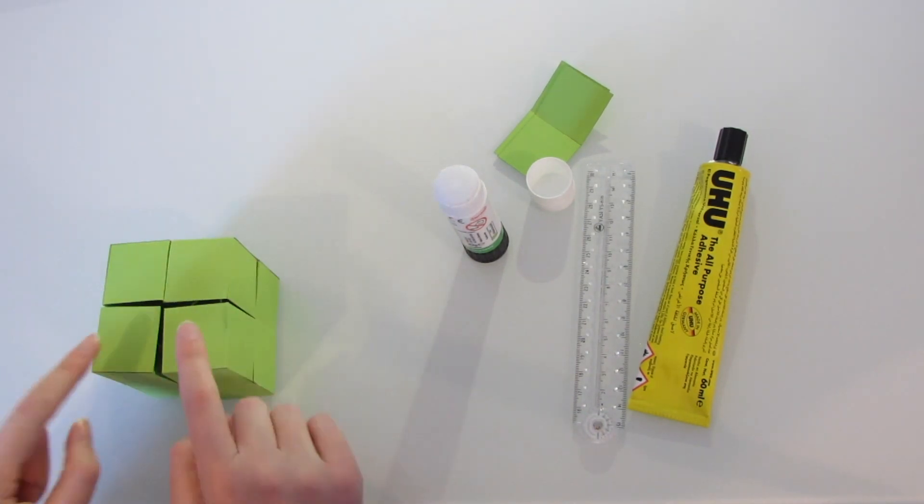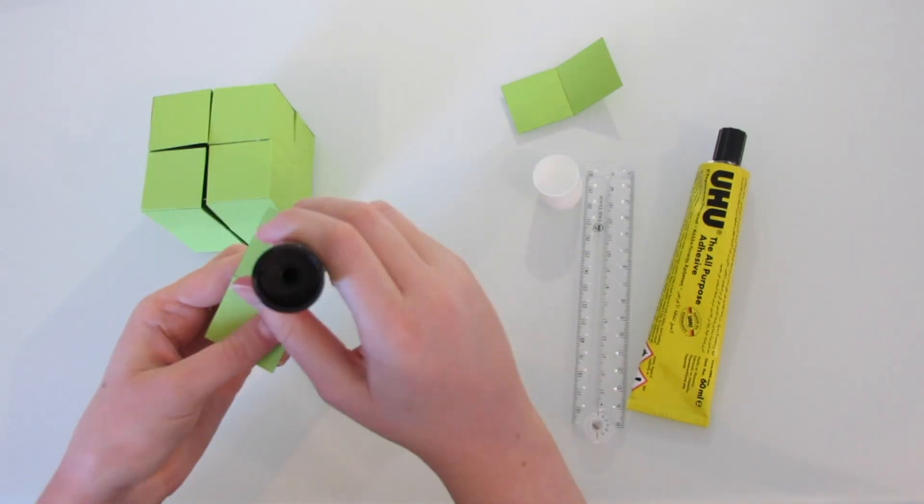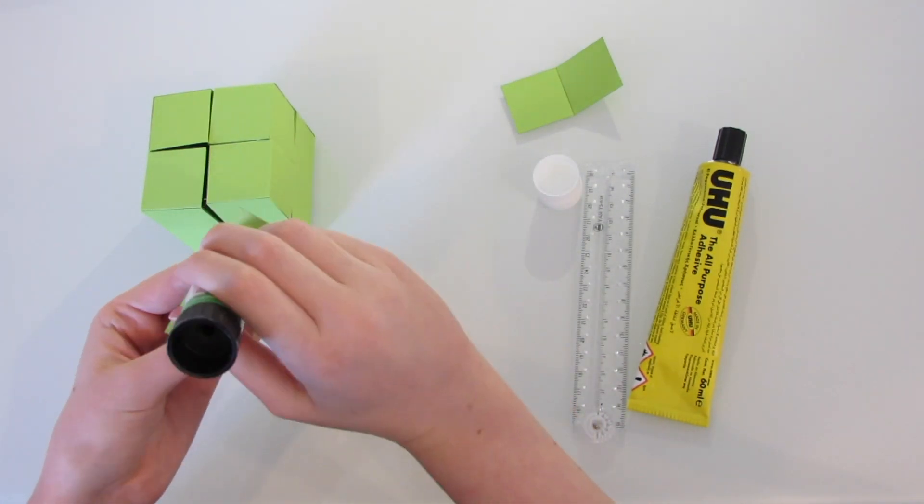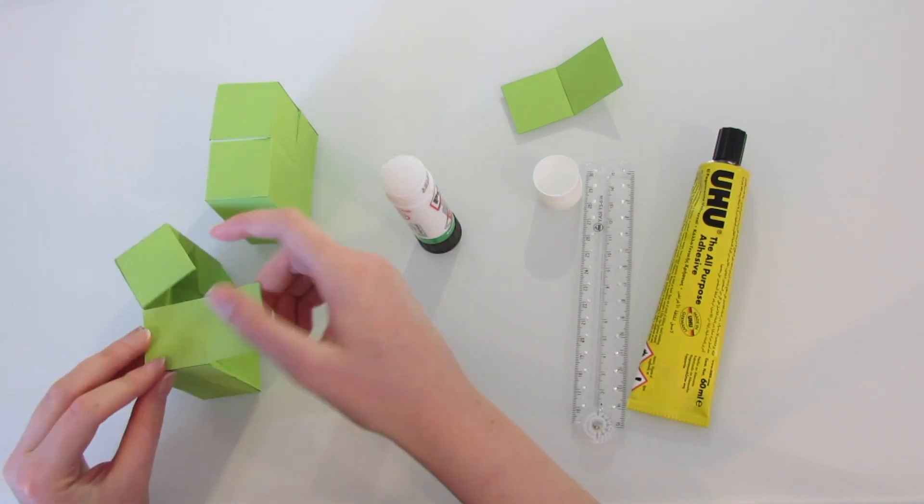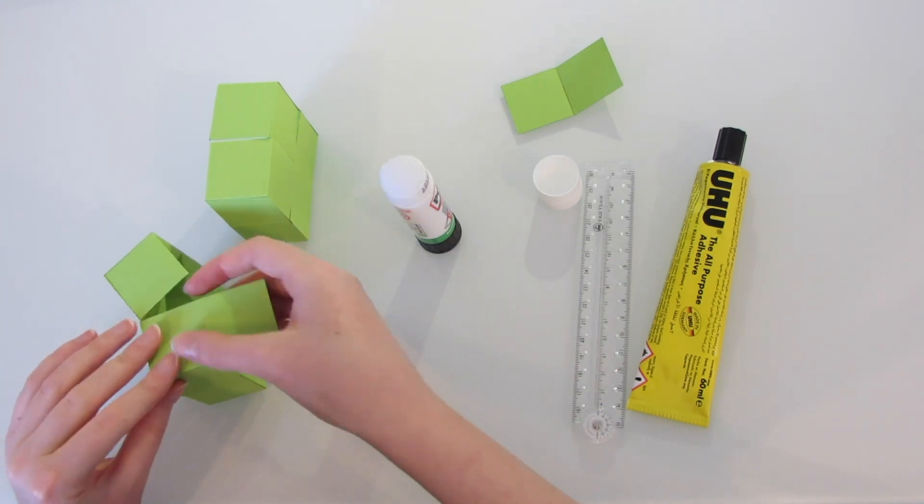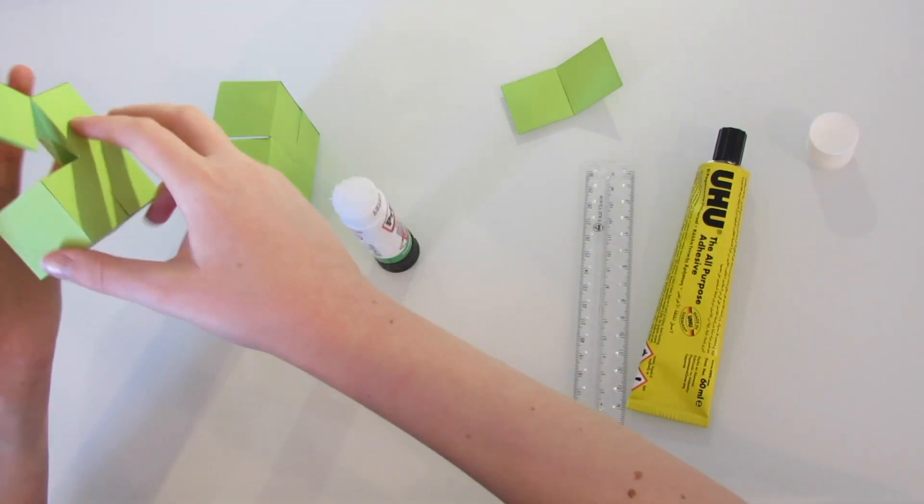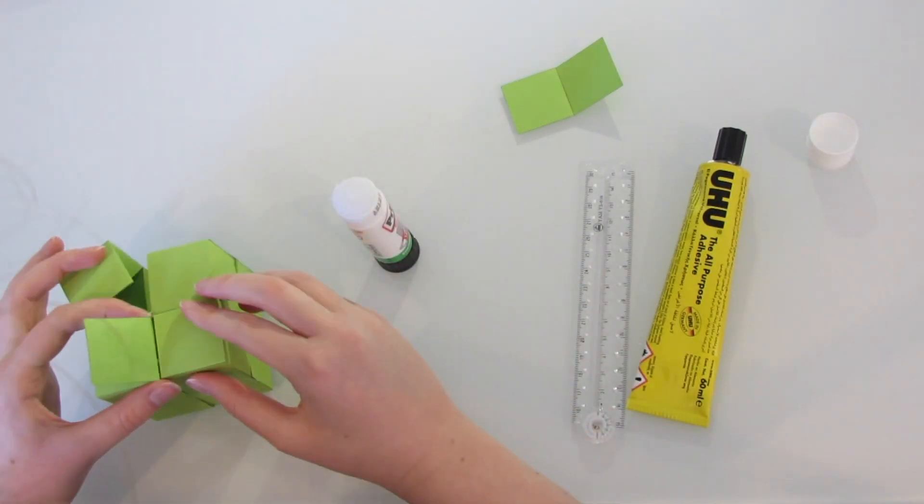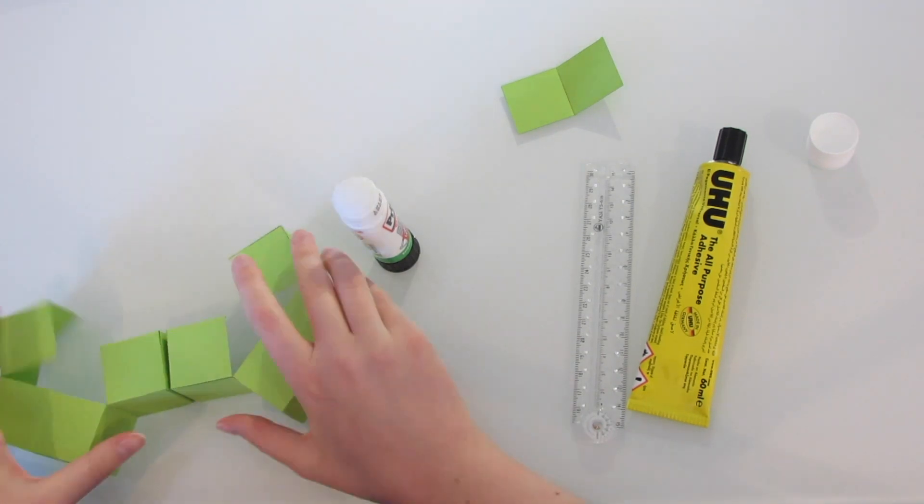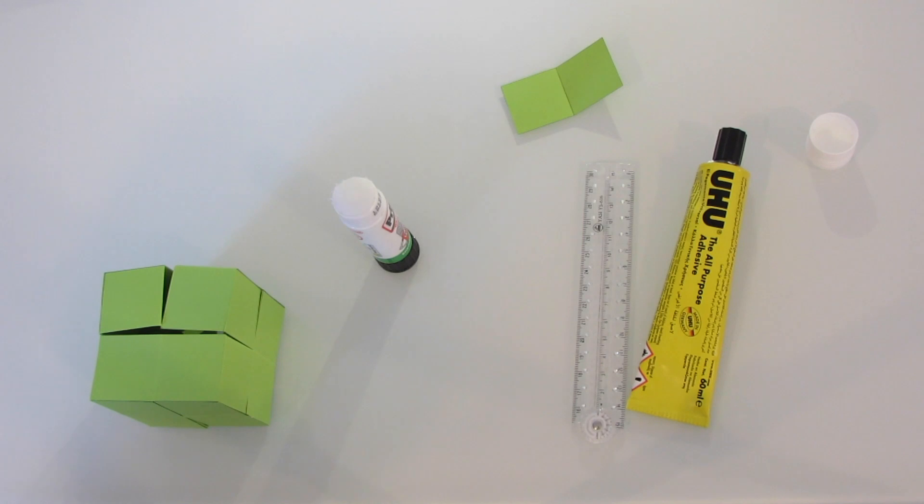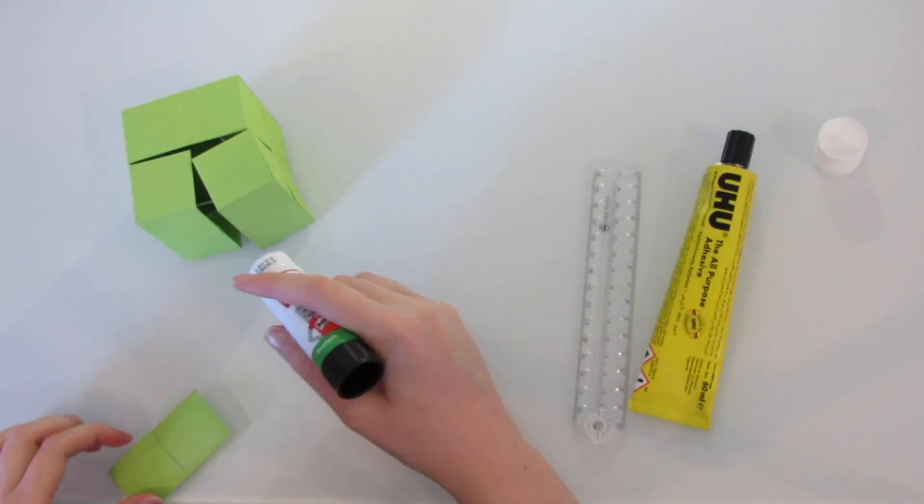So we connect these two together and these two together in the same way as before, gluing one of these pieces over the top as accurately as possible. Then all we need to do is carefully attach the final piece and then it will be finished.